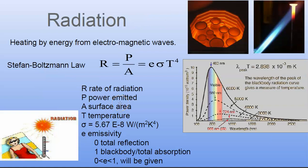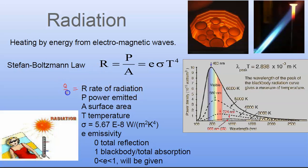The third mechanism is radiation — energy moving through space by electromagnetic waves. The best example is the sun shining down on you; that light, which includes infrared, ultraviolet, X-rays, and more, reaches us and we feel hot. The formula involves the rate of power emitted per unit area. E is the emissivity — a number between 0 and 1 that says how much energy gets absorbed versus reflected.